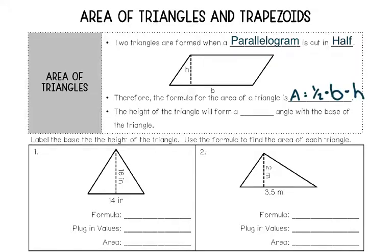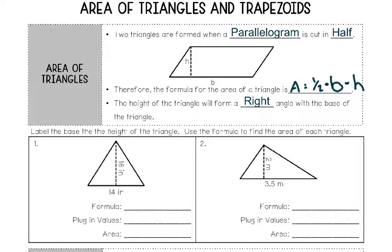The height of a triangle will form a right angle with the base of the triangle. That's something else important to know. The height forms a right angle with the base of the triangle. I like formulas because it's just plugging numbers into them, and that is so easy to me.